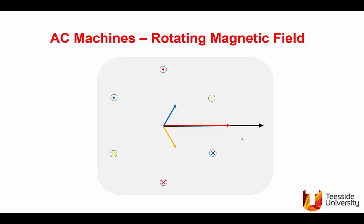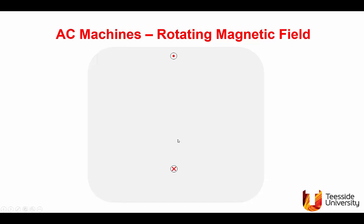Now we consider a case when the current values have changed. Remember the positions in space remain the same, only the current values change. The red current is now 1 ampere, the blue current is still 1 ampere, but the yellow current has increased to 2 amperes — twice the length of either blue or red. Adding these three vectors together, you get the resultant component, and you can see it has moved clockwise from theta equals zero to a new position, as a result of changes in the magnitude of the excitation current in the three coils.